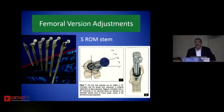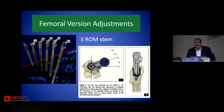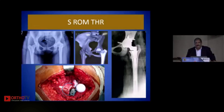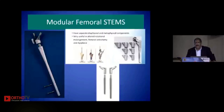We have stems available which allow version adjustments — notably the SROM system, which allows increasing or decreasing version relative to the metaphyseal sleeve. This is useful in all metaphysio-diaphyseal mismatch scenarios, such as a young lady who had anteversion of 57 degrees of the proximal femur. We used the SROM system, retroverted the proximal femoral stem within the sleeve, and achieved an ideal result. Newer modular femoral stems are now more popular and also give us the option of increasing or decreasing version depending on bony morphology and anatomy.